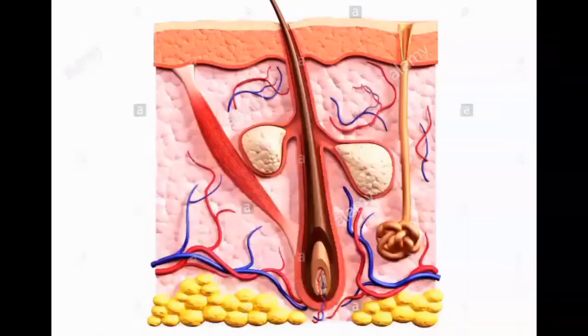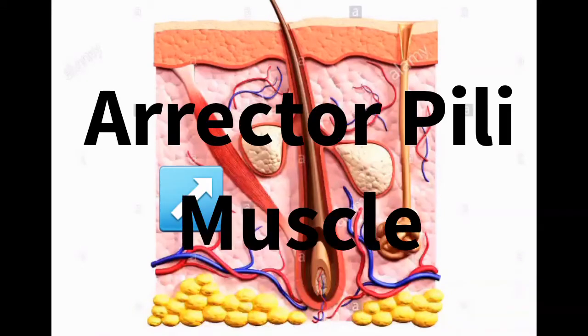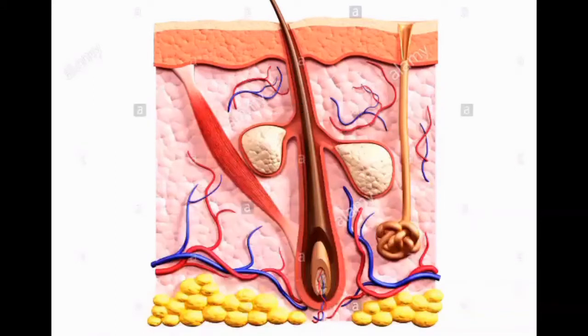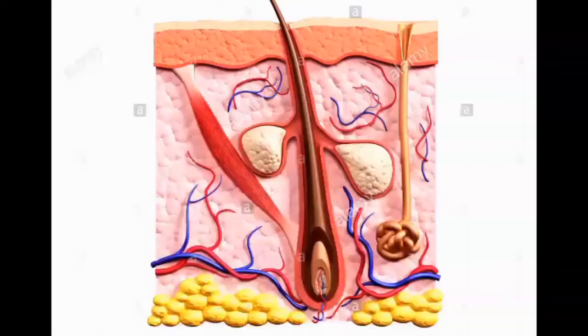This picture gives a better view of the next accessory organ, which is this band of smooth muscle here called the erector pili muscle. It is connected to the papillary layer of the dermis and the hair follicle. When it contracts, your body will get goosebumps and your hairs will stand up straight.